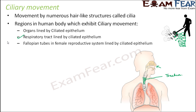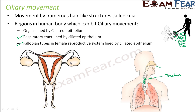Another place where you can find ciliated epithelium is the fallopian tubes in the female reproductive system. The ovary produces eggs and the eggs are carried by the fallopian tubes to the uterus. The fallopian tubes are also lined by ciliated epithelium, and the movement of the cilia helps propel the eggs produced in the ovary to move through the fallopian tube towards the uterus.